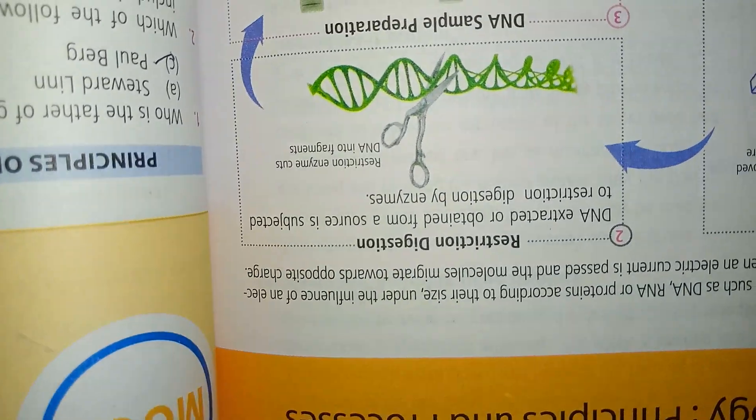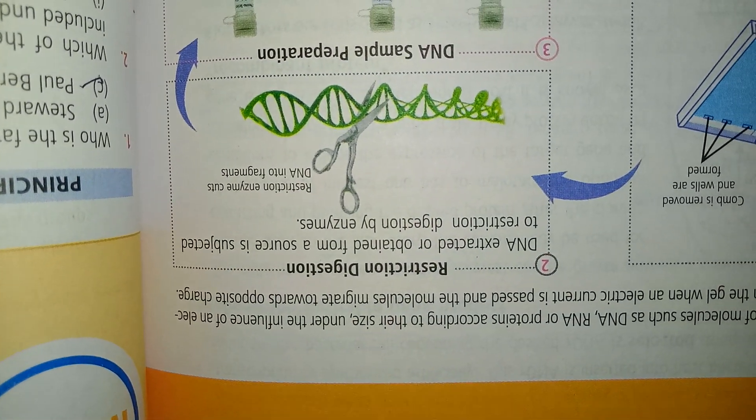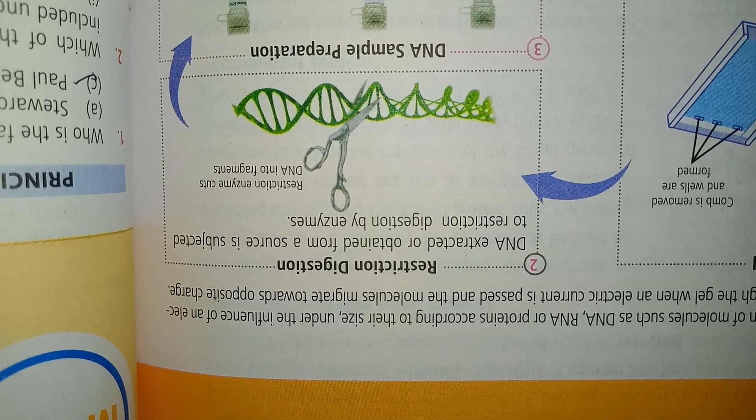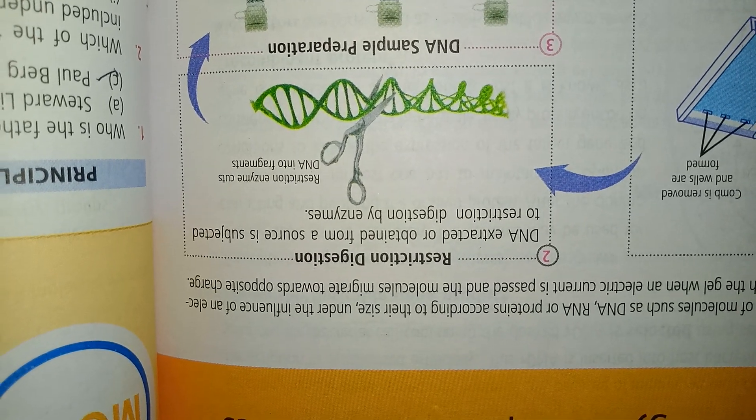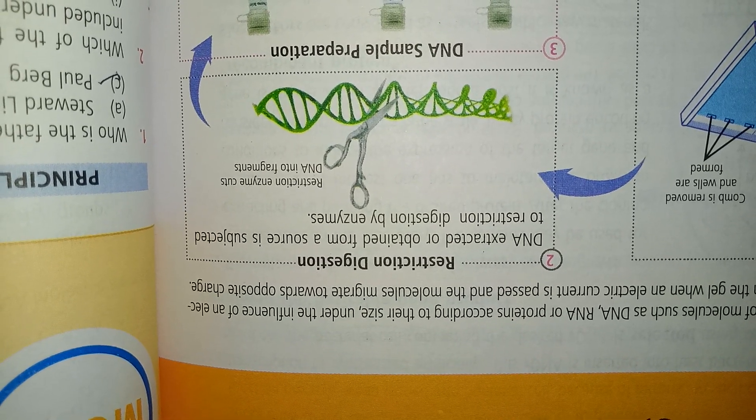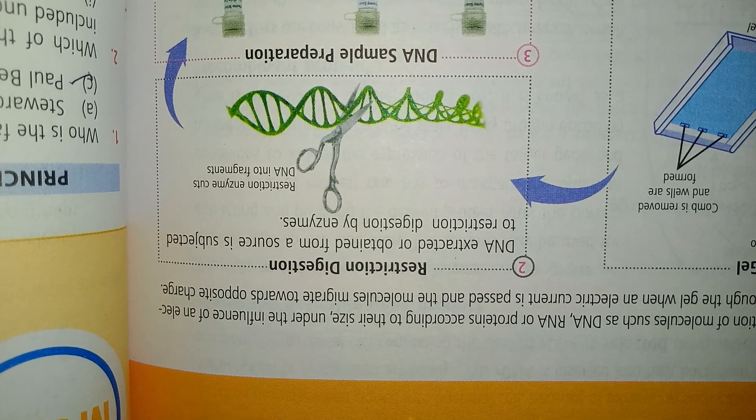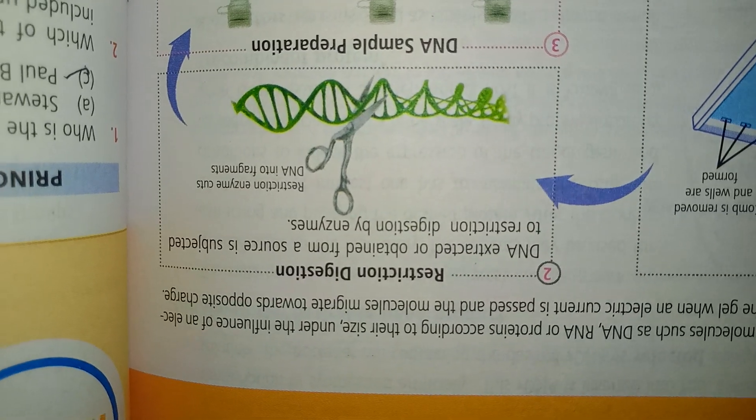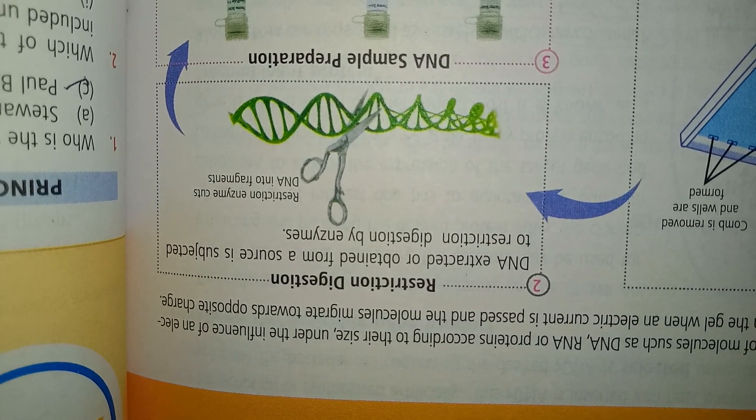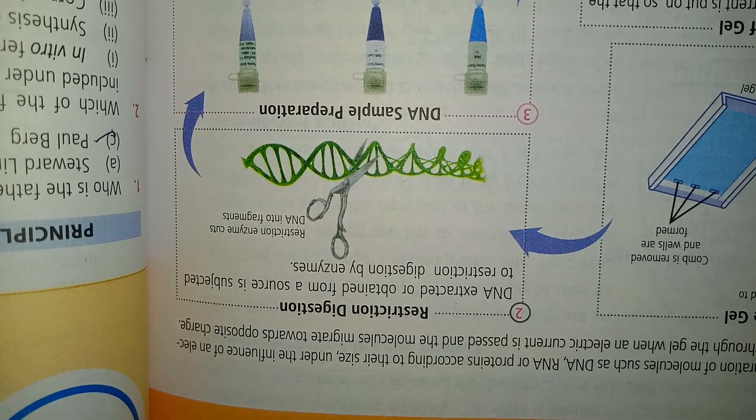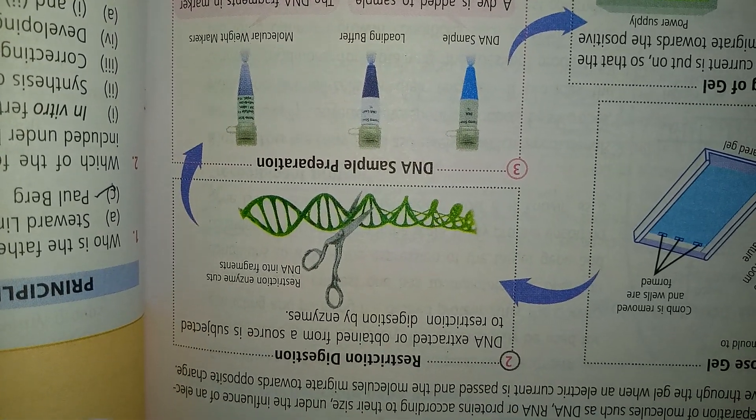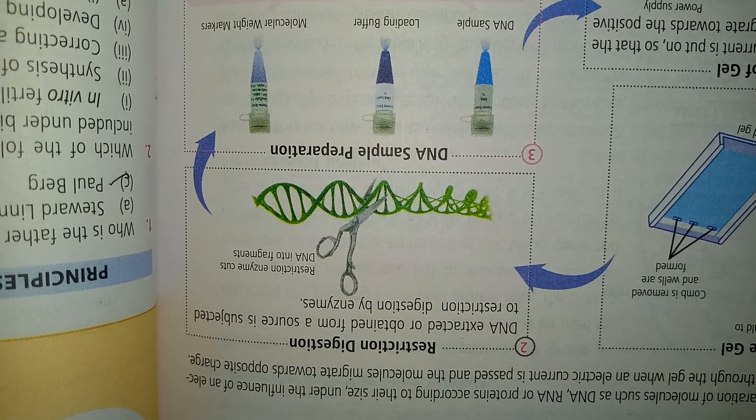Restriction digestion: DNA is extracted, often from a source, and is subjected to restriction endonuclease digestion by the enzyme. Restriction enzymes cut DNA into fragments. DNA samples are prepared and DNA samples are loaded.